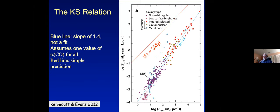This is not just a problem of the Milky Way. The Kennicutt-Schmidt relationship shows that the star formation rate surface density scales with the surface density of gas across essentially all galaxies. The Milky Way is pretty typical. If the relevant timescale were 3 million years, the points would be clustered around the freefall prediction line, but the discrepancy is orders of magnitude. So this is a problem that afflicts not just the Milky Way, but essentially all galaxies.